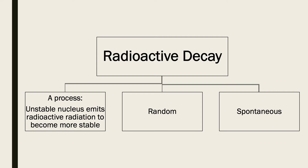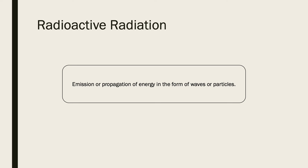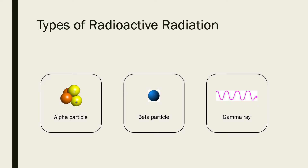Our lesson today will be about radioactive decay. Radioactive decay is a process where an unstable nucleus emits radioactive radiation to become more stable. The process is random and spontaneous. Radioactive radiation is an emission or propagation of energy in the form of waves or particles. There are three types of radioactive radiation: alpha particle, beta particle, and gamma ray.